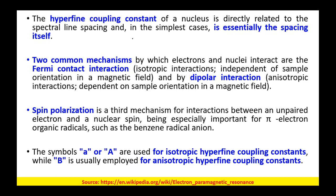In NMR we saw that the signal of a hydrogen can be modulated by neighboring hydrogen atoms — if there are two neighboring hydrogen atoms, the peak splits into three. The distance between these peaks is the hyperfine coupling constant, which provides structural information about the molecules. Similarly in EPR/ESR, we also have splitting of peaks, which we will discuss shortly.